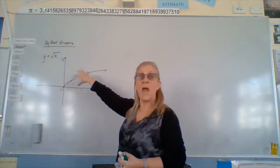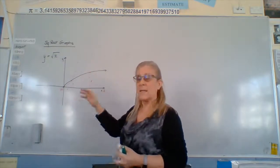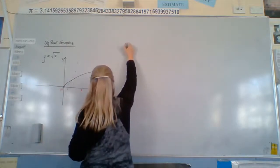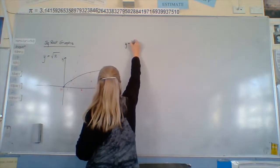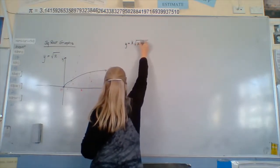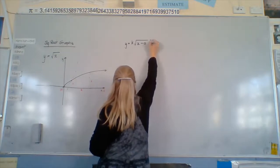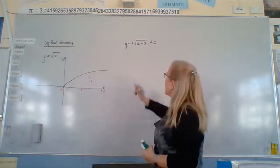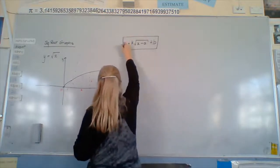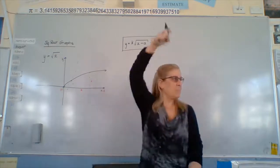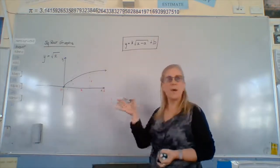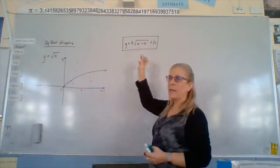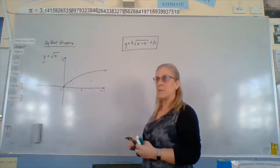So we're just going to pick this graph up and move it around the place. That is our general formula — that's the one you're going to be given. K again does this. A moves horizontally. B moves vertically. Negative A because whatever A is, is the movement.